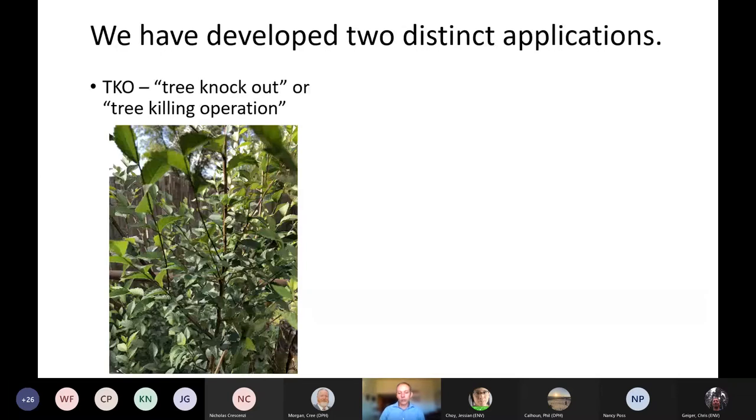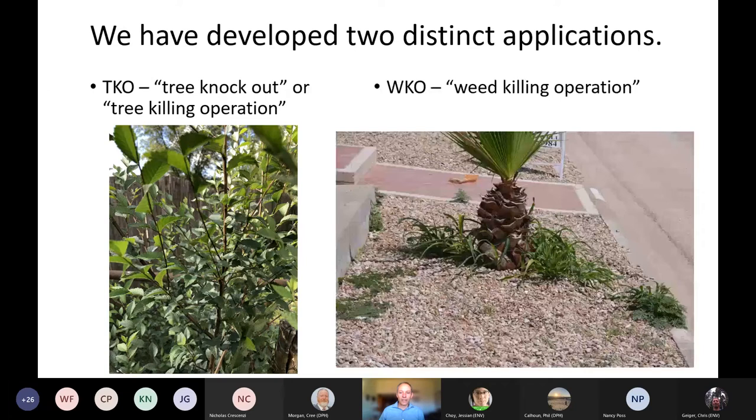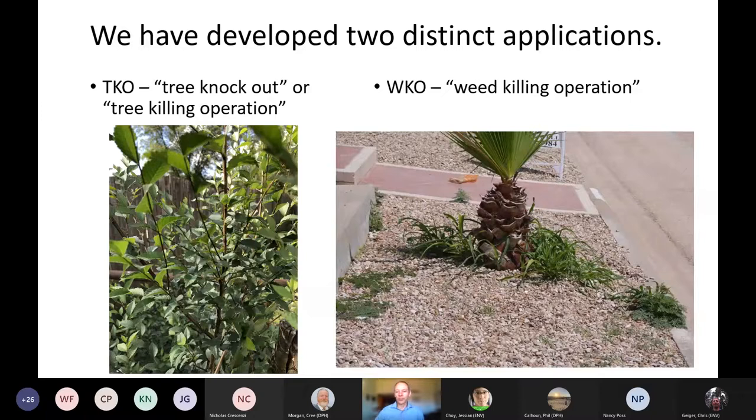So, so far, there are two, actually three main applications that we're using this for. We're calling one the tree killing operation, TKO, and that's used to kill small trees, mostly is what we've used it on so far, up to four inches in diameter, approximately is where we're using it, or smaller. And we're also using it in a way we're calling WKO, or weed killing operation. Trees could be weeds too, but just for simplicity, we're keeping TKO for hardwood trees and WKO for other things. We're also using it to control climbing vines, as I indicated earlier, but that's still in the WKO class for us.